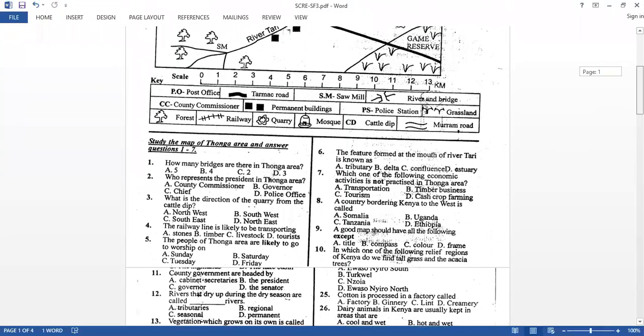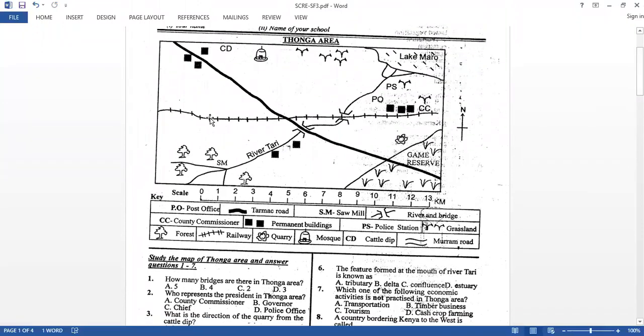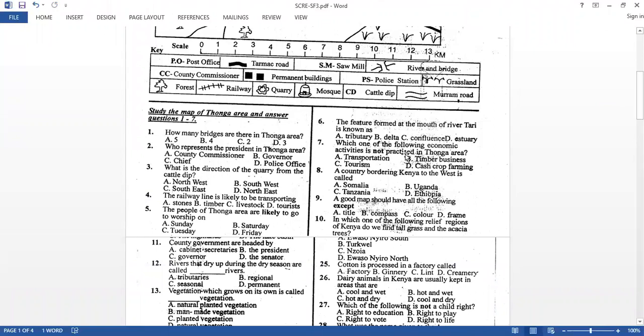The railway line is likely to be transporting what. So you go and check where the railway line is. Where is it coming from and where it is going? Then you'll find there is some permanent buildings here. So maybe this railway line is transporting some of the construction materials. So if you look at the choices, we have stones, timber, livestock and tourists. So you can choose stones, mainly used for construction.